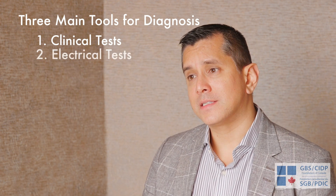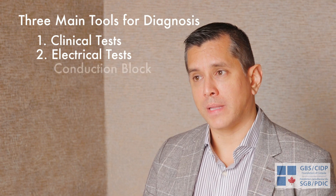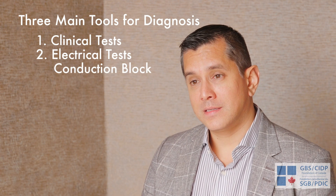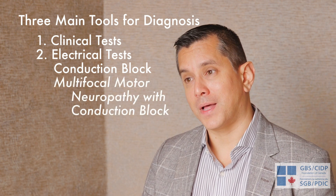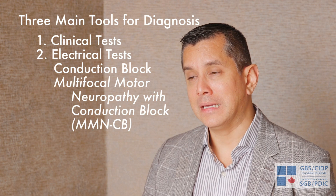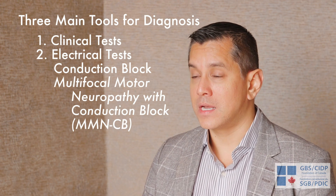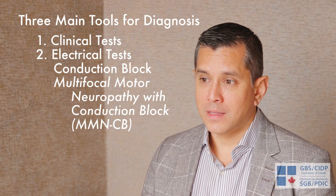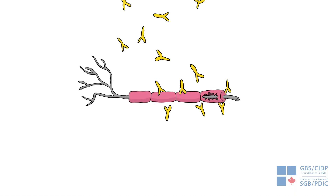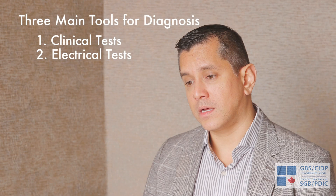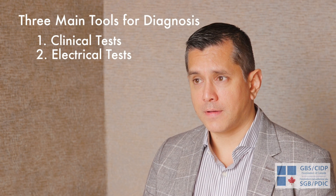In terms of the nerve tests, the key is we look for something called conduction block. In fact, it is in the name — often multifocal motor neuropathy with conduction block, or MMN-CB. The conduction block is key: the motor nerves have a block in them. Some antibodies presumably attack the nerves and cause a short circuit or an inability for that motor nerve to conduct, and then weakness develops. These electrical tests are done up and down the arm and leg to identify this.